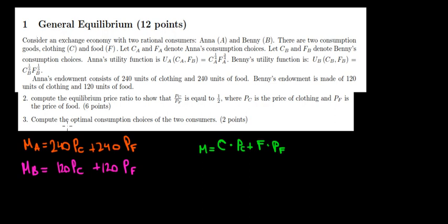Let's work on this question about general equilibrium. We have an exchange economy with two consumers, Anna and Benny. There are two goods to consume: clothing and food. We have their utility functions — this is for Anna, this is for Benny. We have the endowments for Anna: 240 units of clothing and 40 units of food. Benny's endowment is 120 units of clothing and 120 units of food.